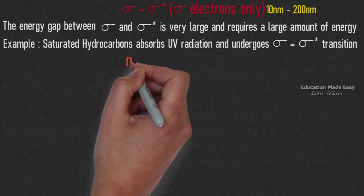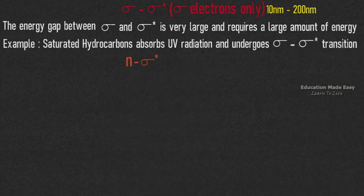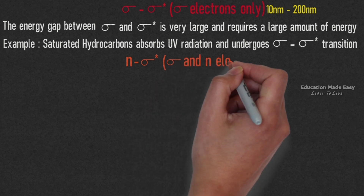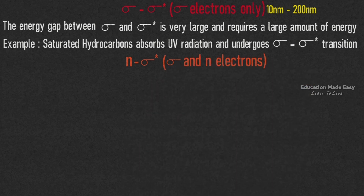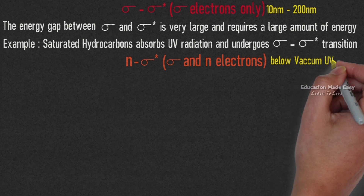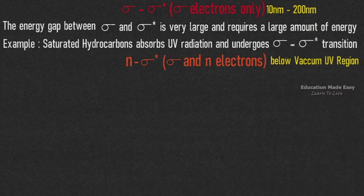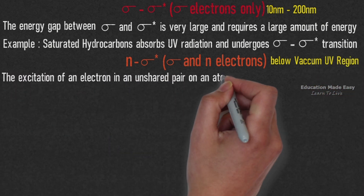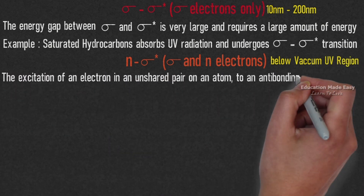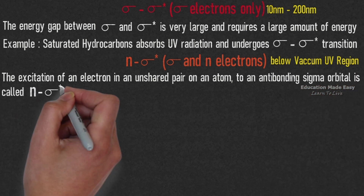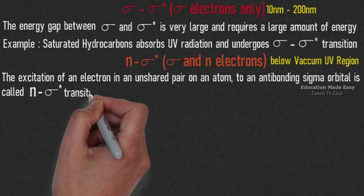The second type of electronic transition is n to sigma star transition. Sigma and n electrons are involved and it happens below the vacuum UV region. The excitation of an electron in an unshared pair of an atom to an anti-bonding sigma orbital is called n to sigma star transition.